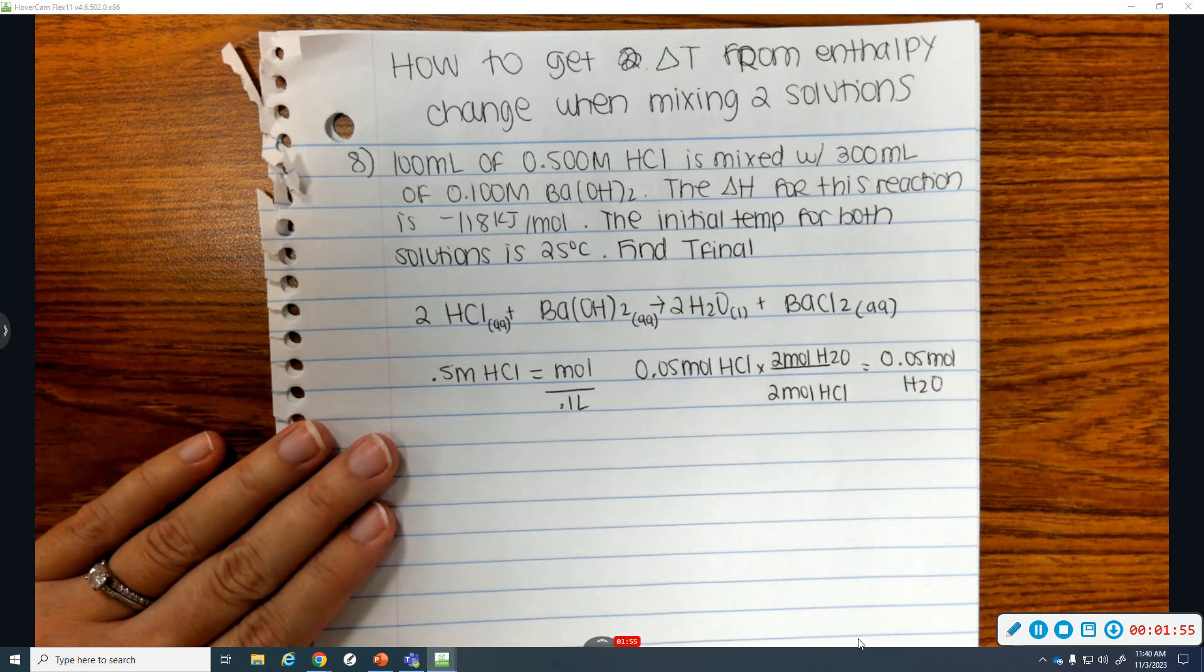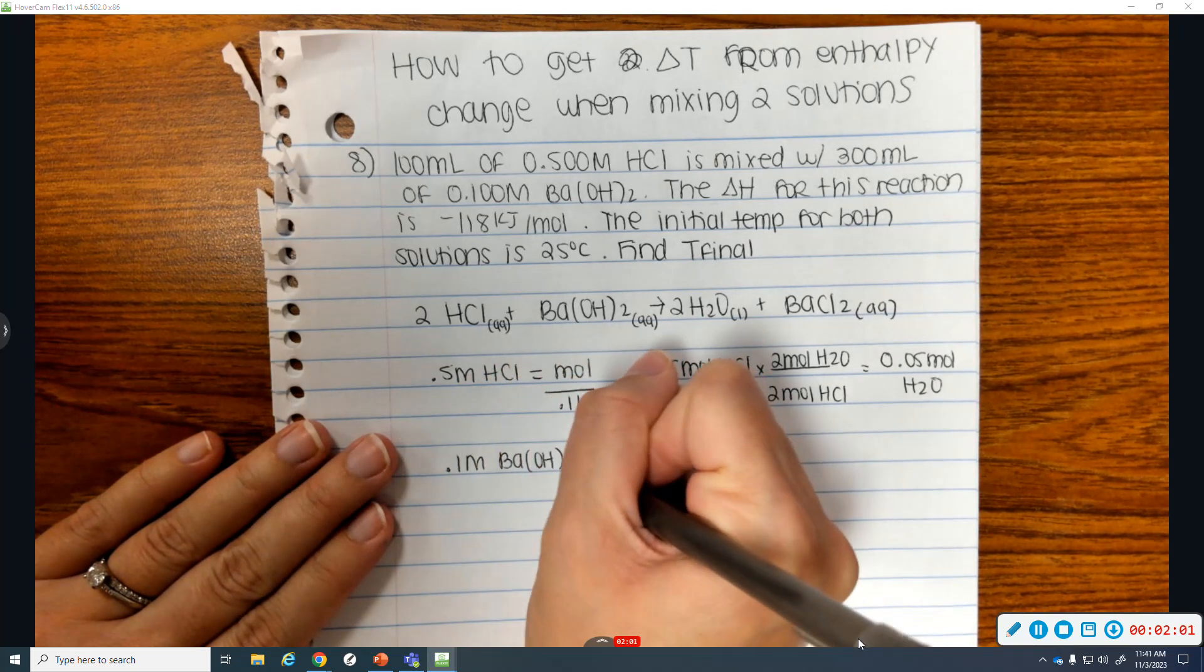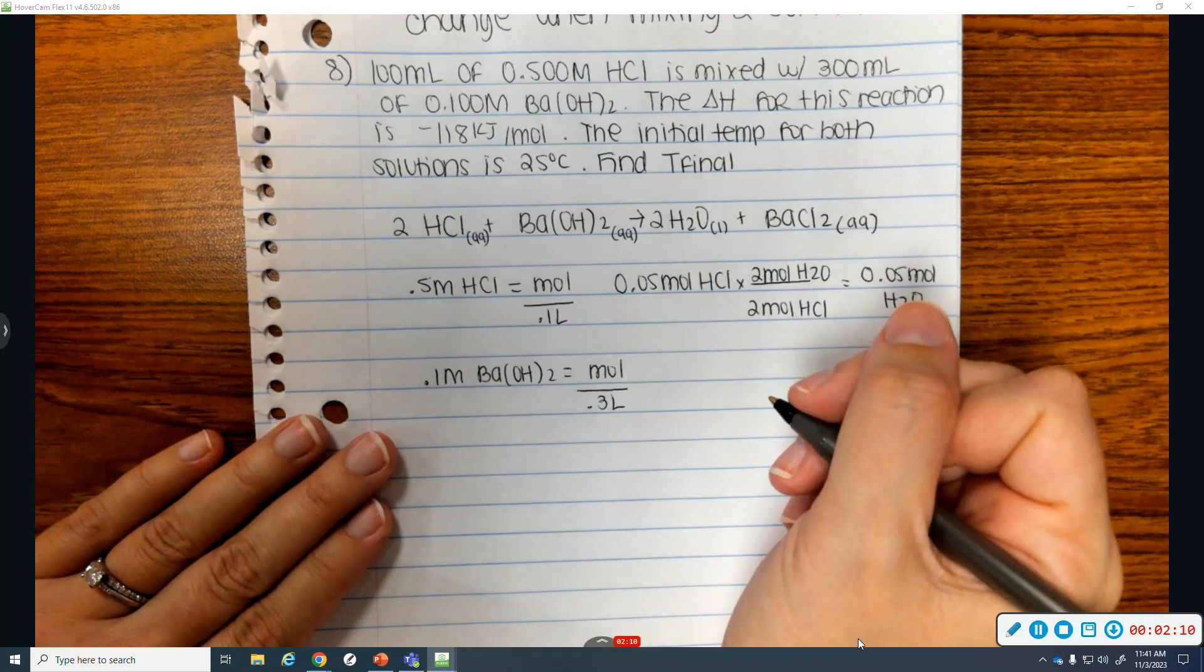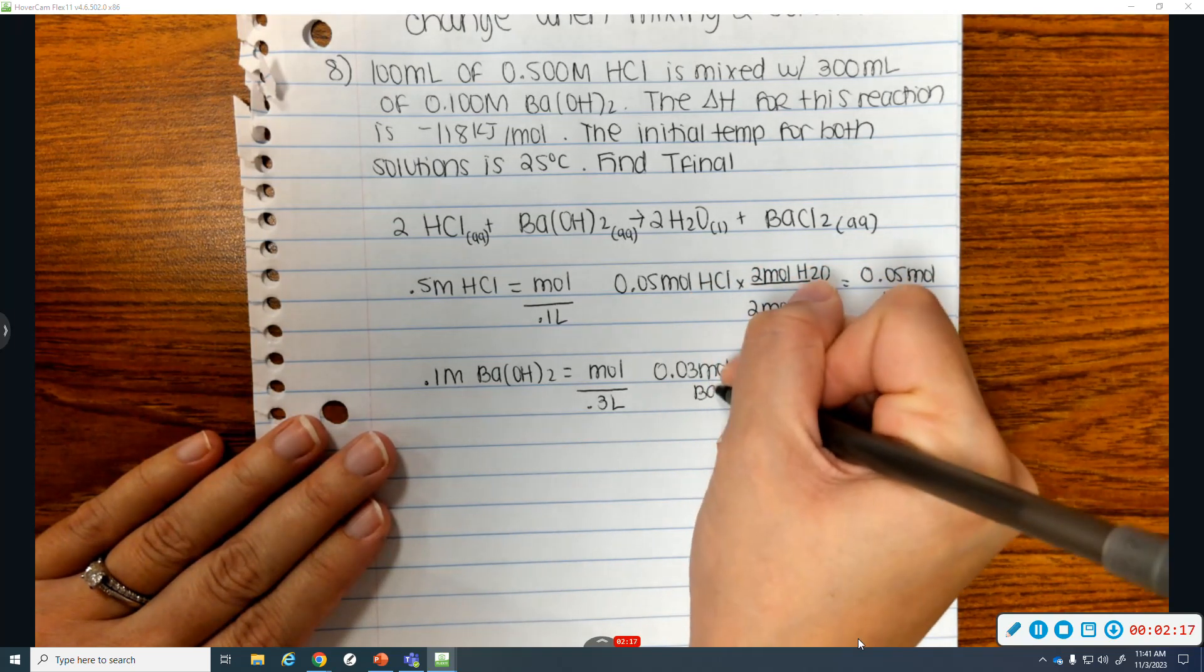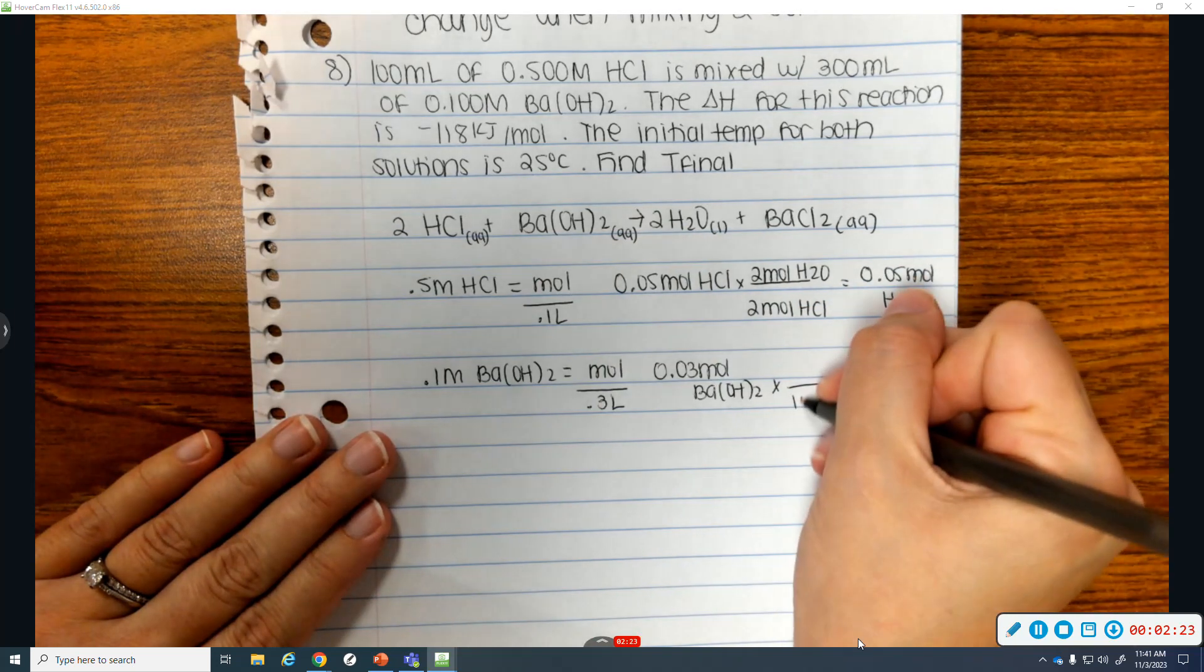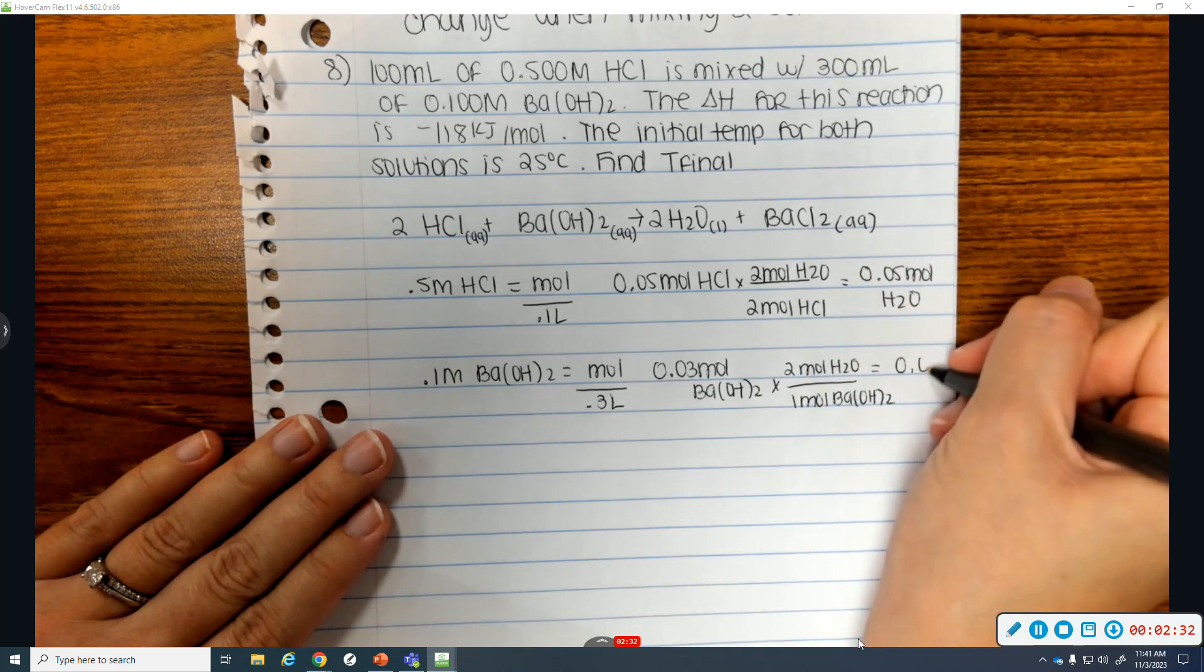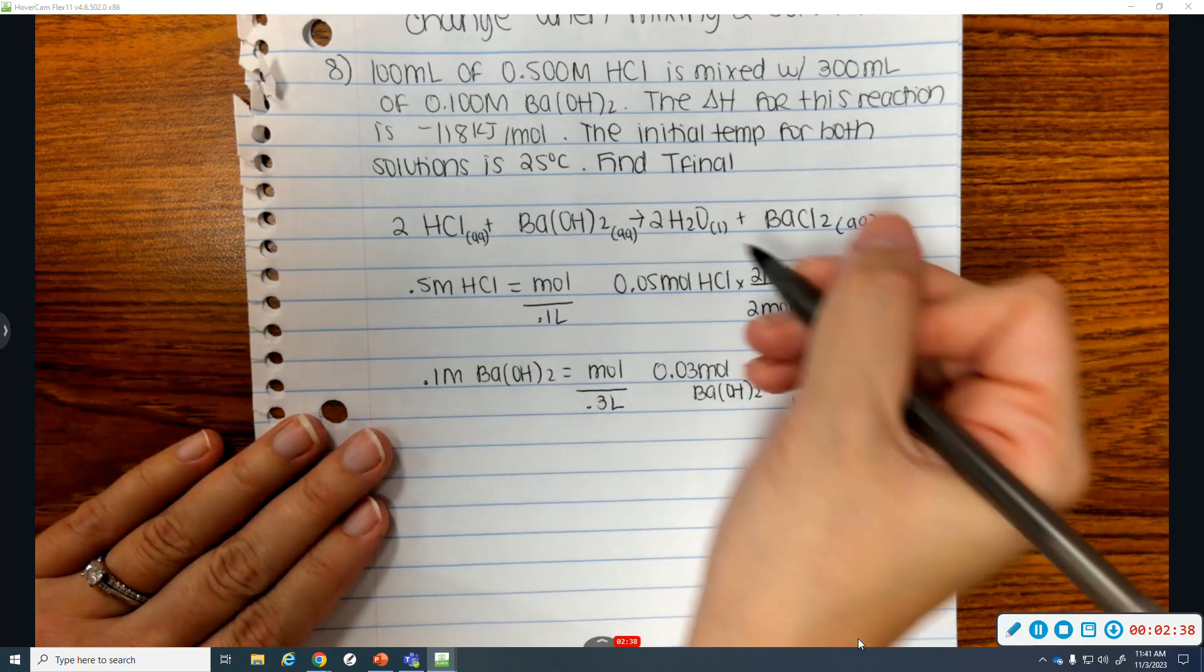And then I'll check the barium hydroxide. It has a 0.1 molarity. It's over 0.3 liters. So, 0.1 times 0.3 is 0.03. And solve for the same product. So, this is a 1 to 2 ratio. One mole barium hydroxide to two moles water equals 0.06 moles of water. The reactant that makes the least amount of product is HCl.